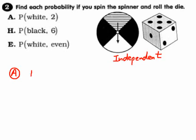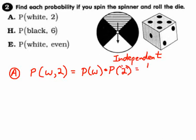These would be independent — the outcome of the spinner is not affected by the outcome of the die. So the probability of spinning a white and then getting a two: well, you just multiply them together. What's the probability of a white? I see one white out of a possible four. And the probability of a two: one two on the die out of six faces.